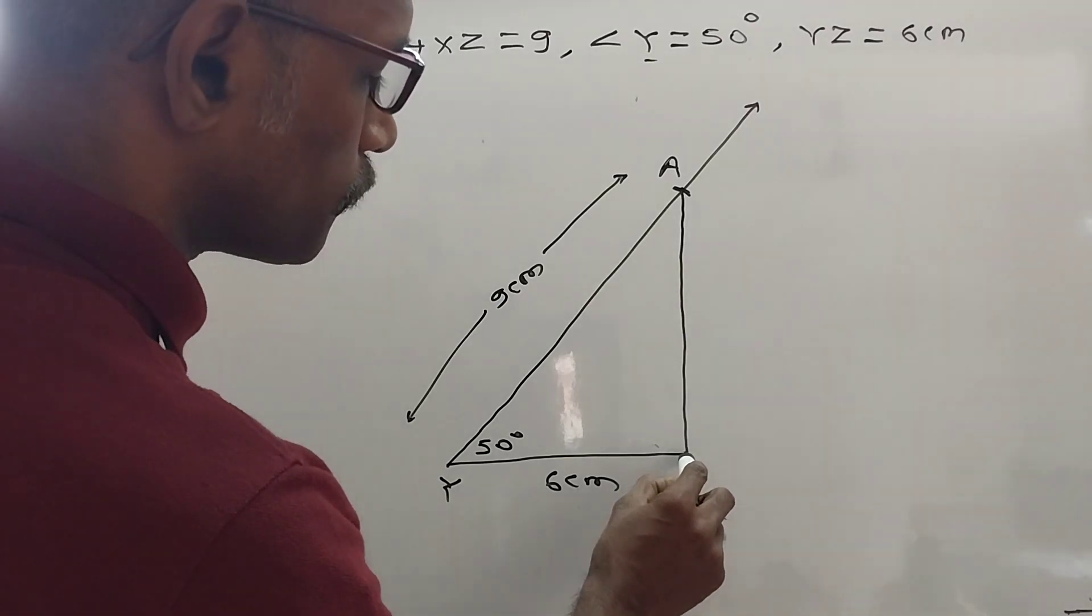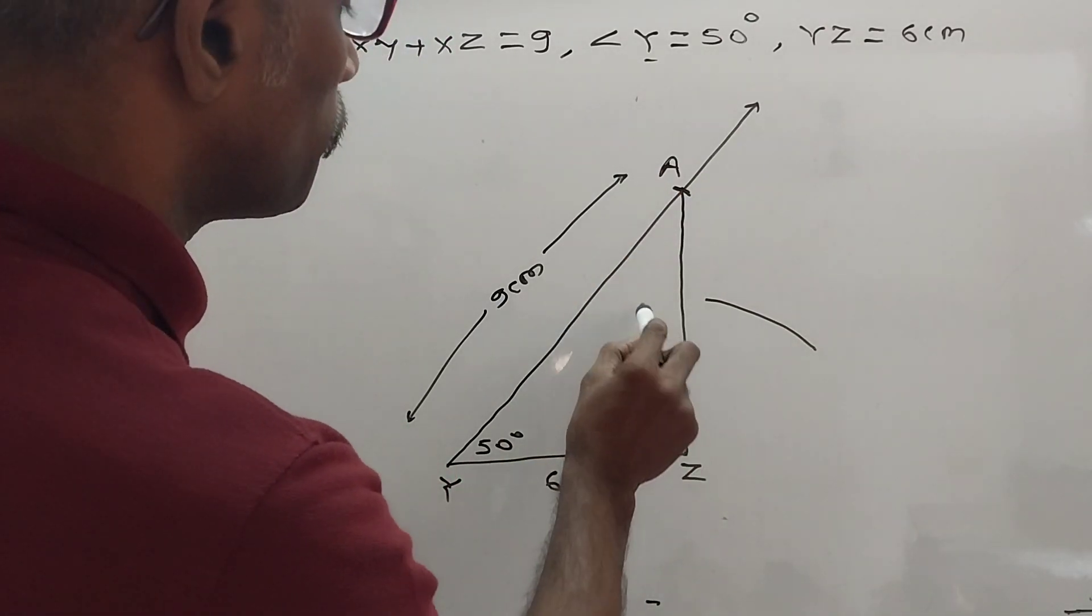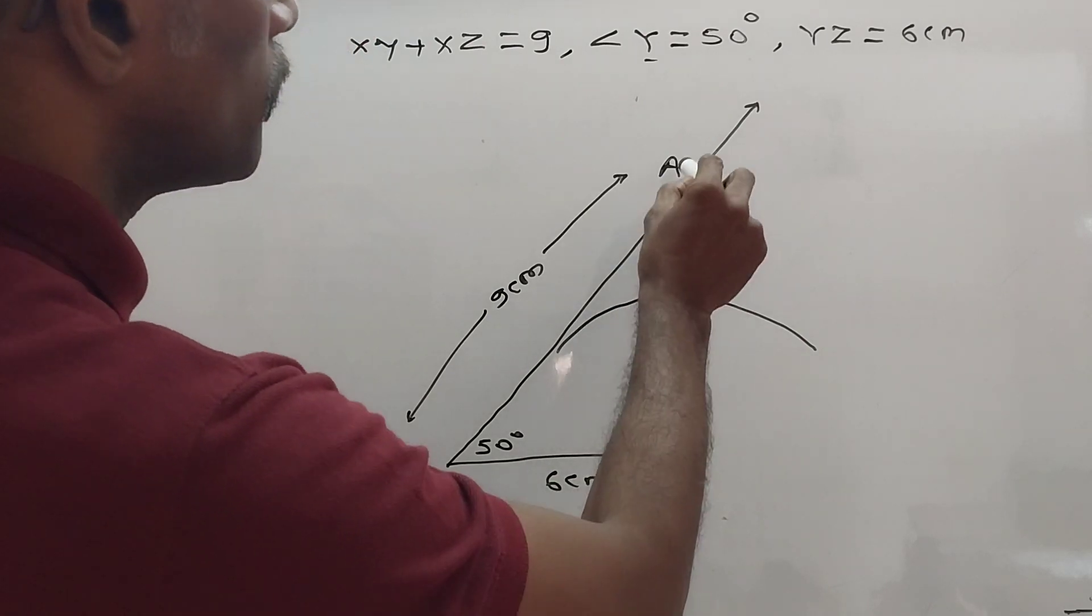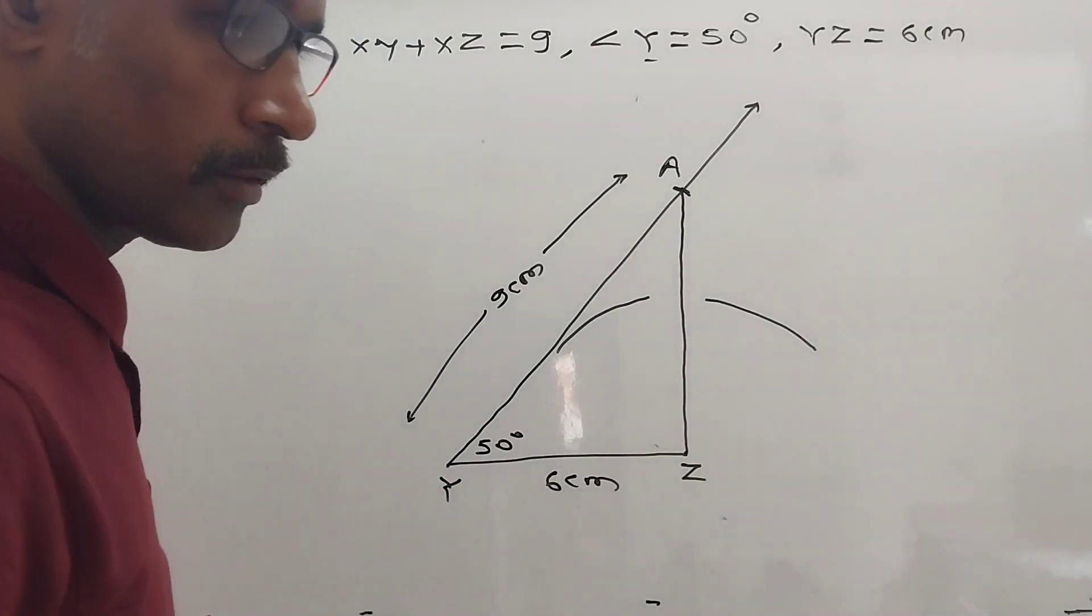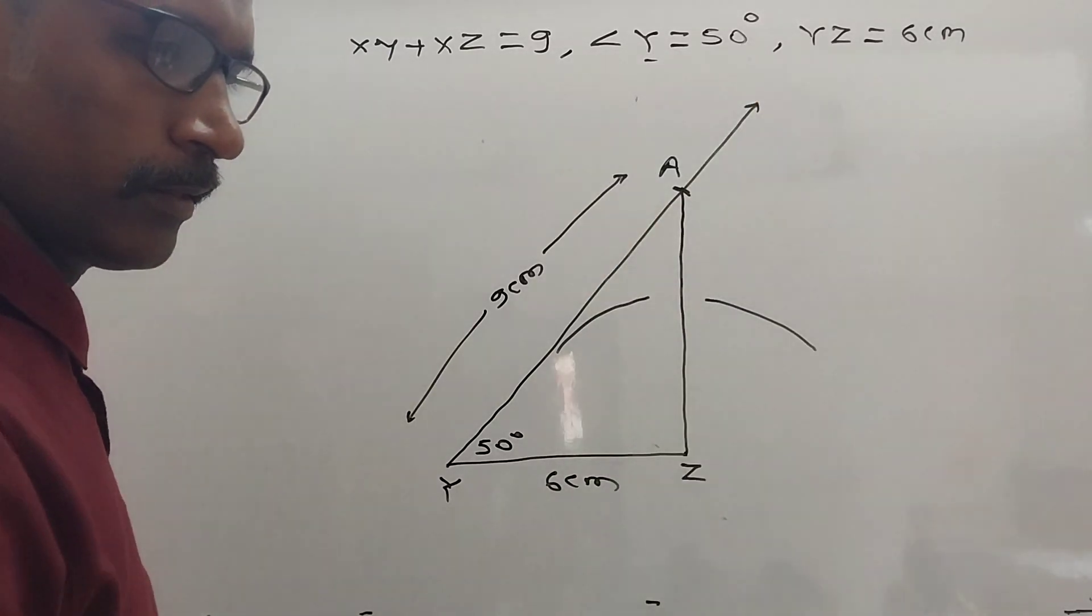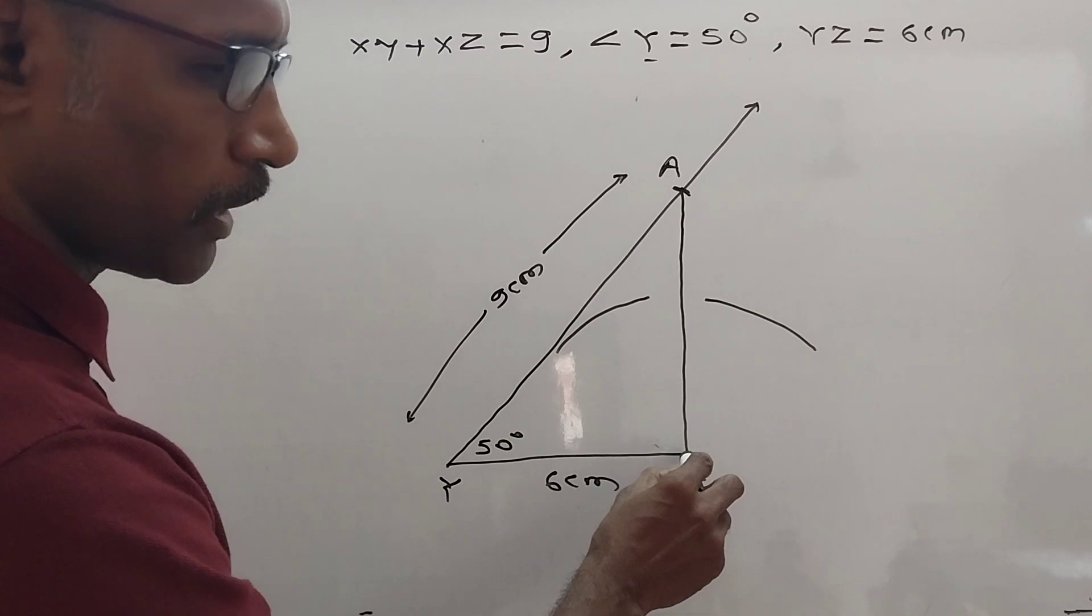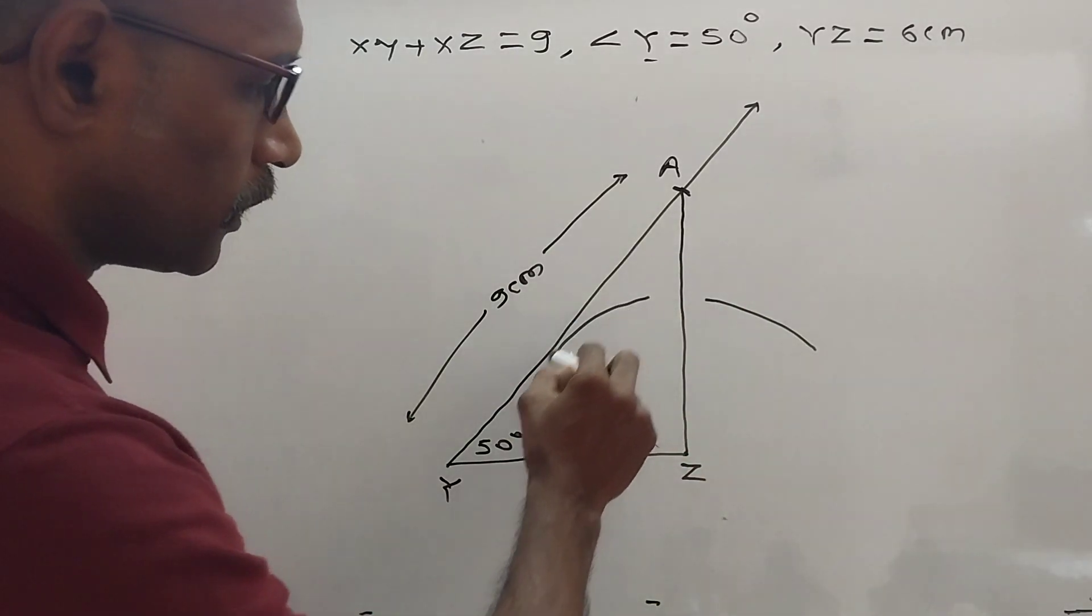And from Z draw arcs near to A. Near to A, because we are drawing perpendicular bisector of segment AZ. Then we keep point active on Z, then draw arcs near A.